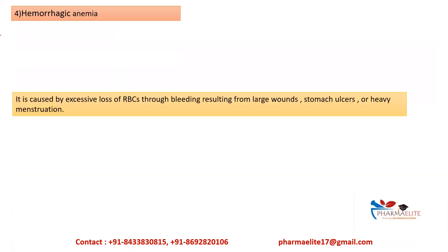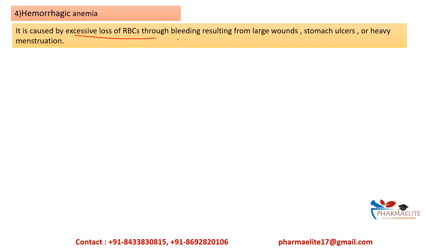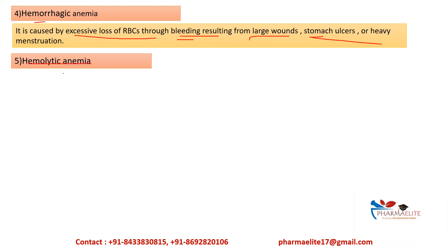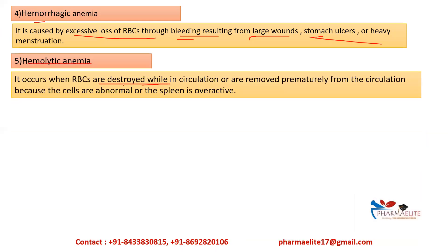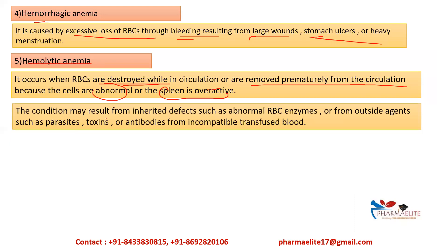Hemorrhagic anemia is caused by excessive loss of RBCs through bleeding, resulting from large wounds, stomach ulcers, or heavy menstruation. Hemolytic anemia occurs when RBCs are destroyed — hemolysis occurs — while in circulation, or are removed prematurely because the cells are abnormal or because the spleen is overactive. This condition may result from inherited defects such as abnormal RBC enzymes, or from outside agents such as parasites, toxins, or antibodies from incompatible transfused blood.